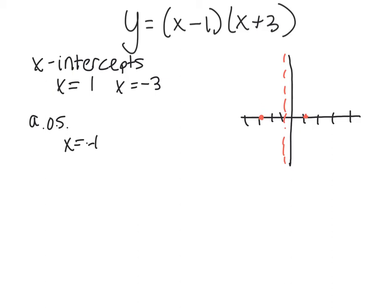So to find my vertex remember that I am going to take x equals negative 1 and that's going to be the x value and what I'm going to solve for is the y value. So I'm going to take negative 1 and I'm going to plug it into my equation everywhere I have an x.